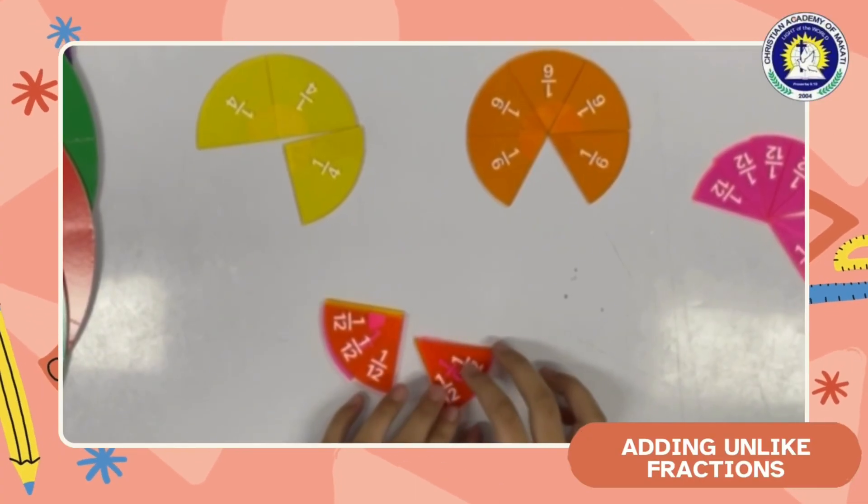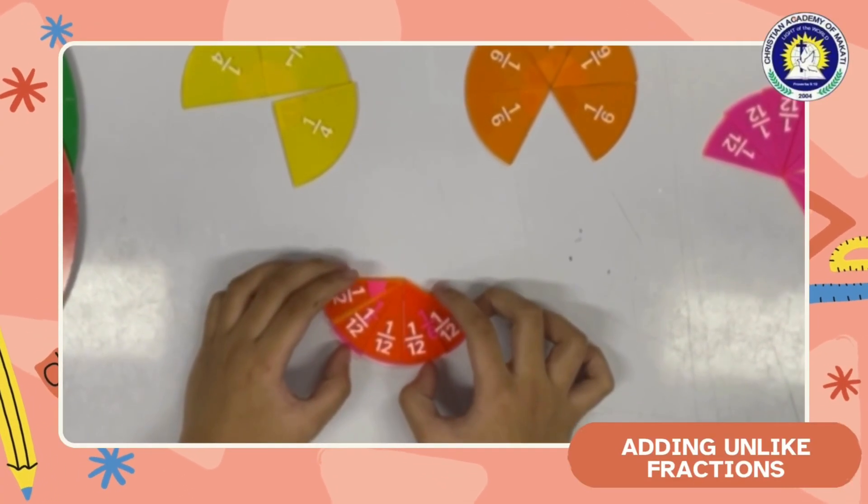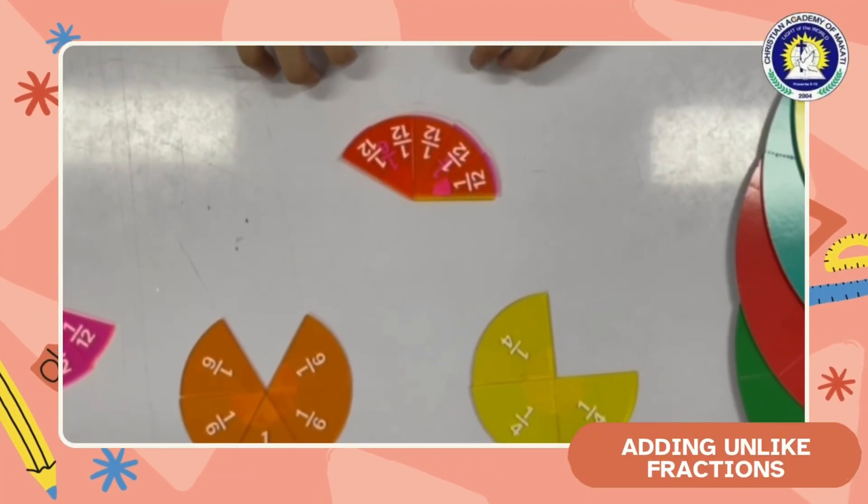So 3 over 12 plus 2 over 12 equals 5 over 12. That's the answer to 1 fourth plus 1 sixth.